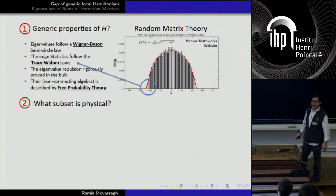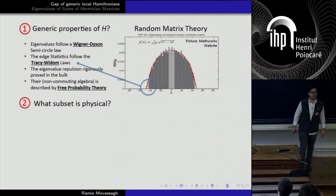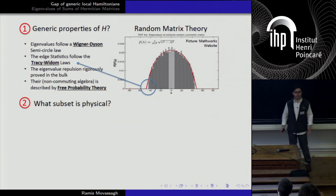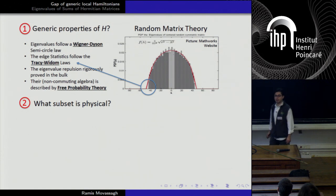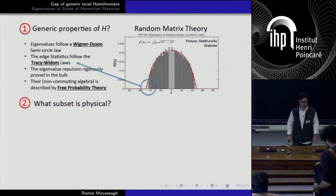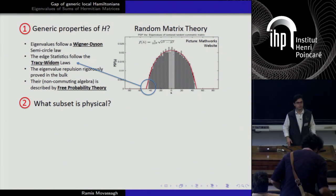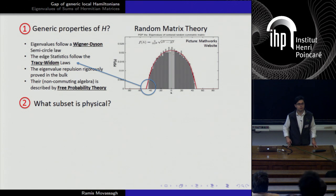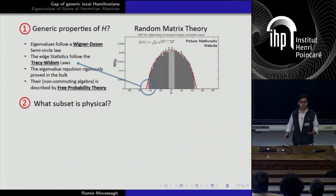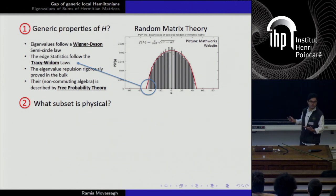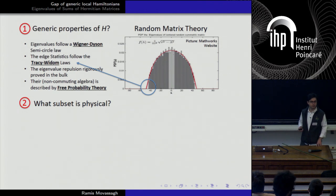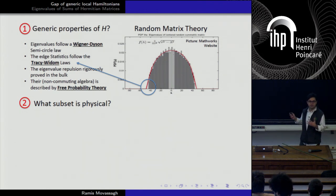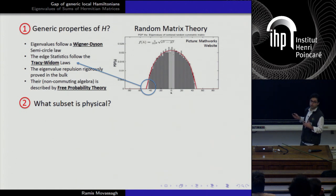You can ask how relevant are these results for physical systems. If you have a local Hamiltonian of some sort, do these universality results really hold or apply in the case of a local Hamiltonian? So we have to ask, in this generic world, what is physical?